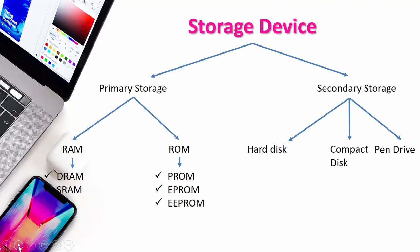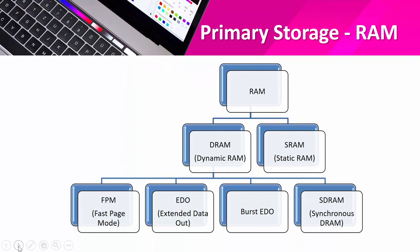Now let me explain primary storage — RAM. RAM is also known as Random Access Memory and it is a type of data storage used in computers that is generally located on the motherboard. RAM is not external; it is located internally on the motherboard. This type of memory is volatile, which means all the information stored in RAM is lost when the computer is turned off. So data stored in RAM is temporary and gets erased — we cannot retrieve that data.